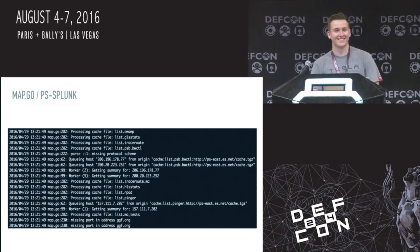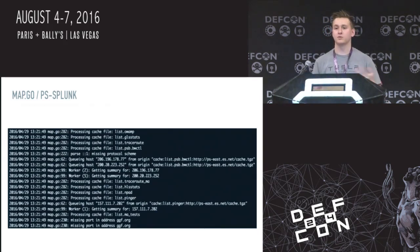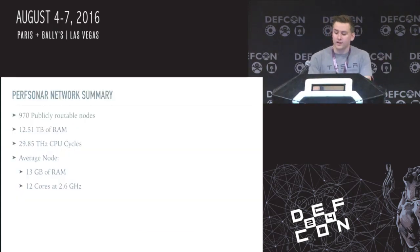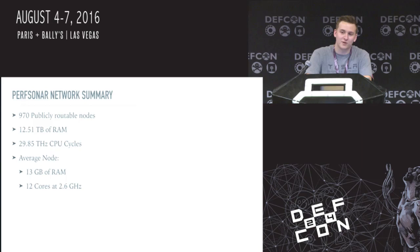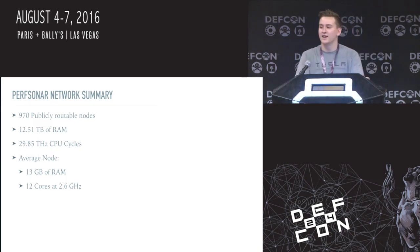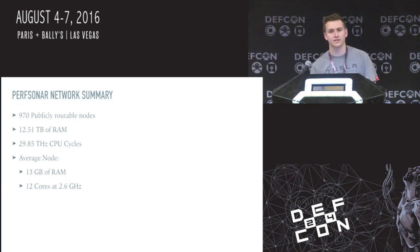Using all of that, as of April 29th when I mapped the network, there were 970 publicly routable nodes, combined totaling 12.51 terabytes of RAM across all of them, and 29.85 terahertz of CPU cycles across all these devices. In easier-to-understand terms, the average node has 13 gigabytes of RAM and 12 cores at 2.6 GHz. Each piece of data also includes information about the network card on the box, so I can tell if it's a 10 gig, 20 gig, or 40 gig network card. Summing all of those together, we get the theoretical bandwidth of the perfSONAR network: 5.719 terabits a second.